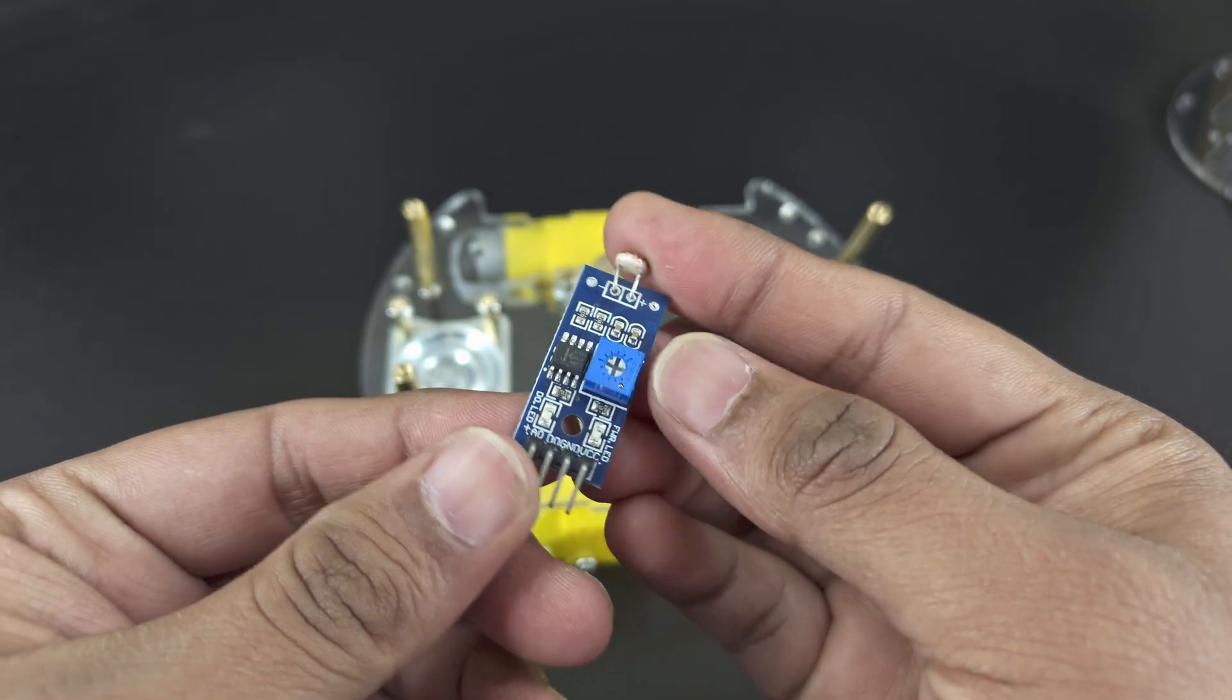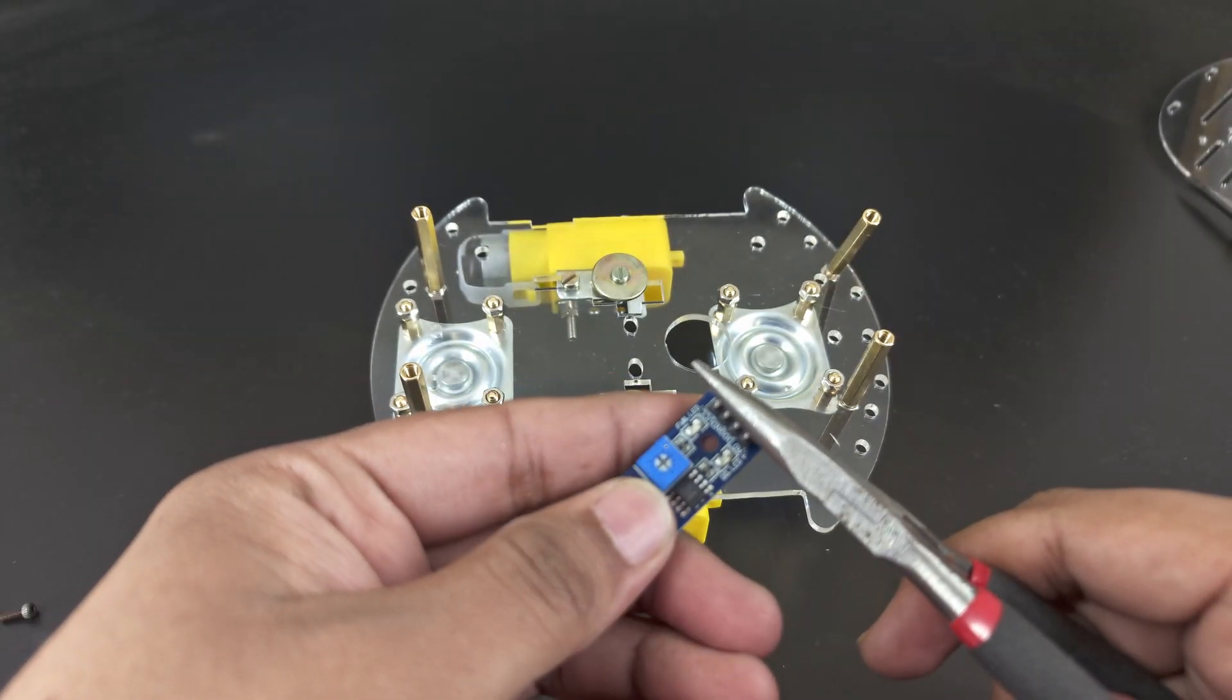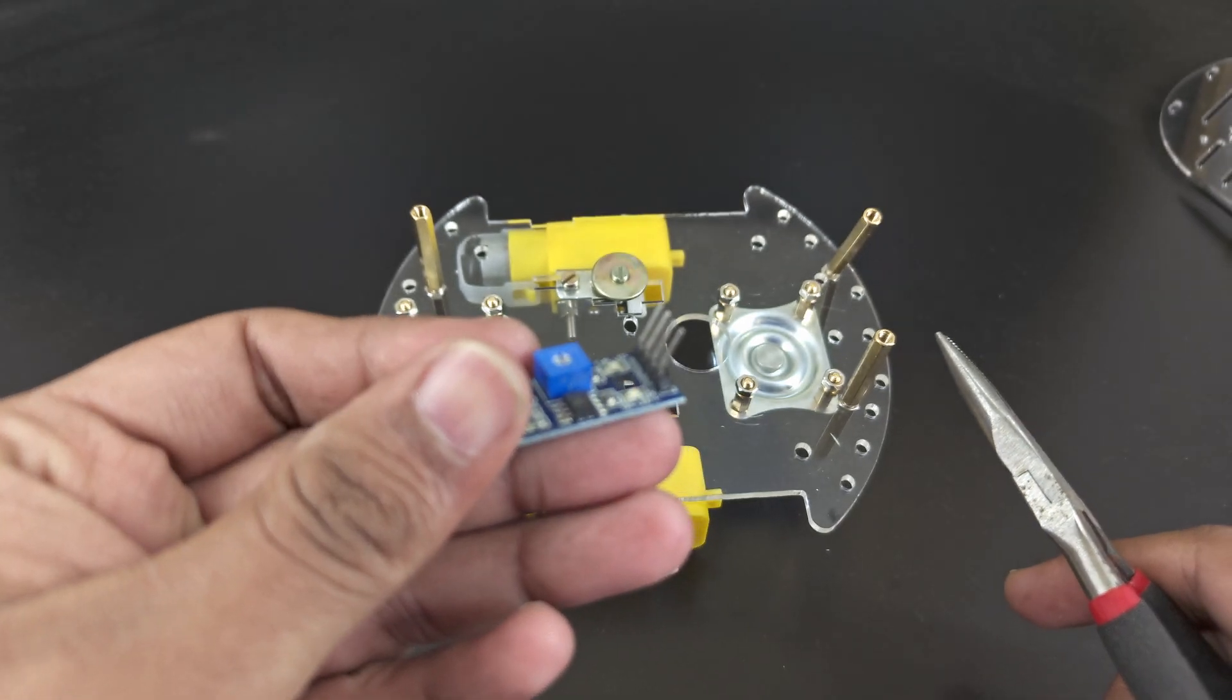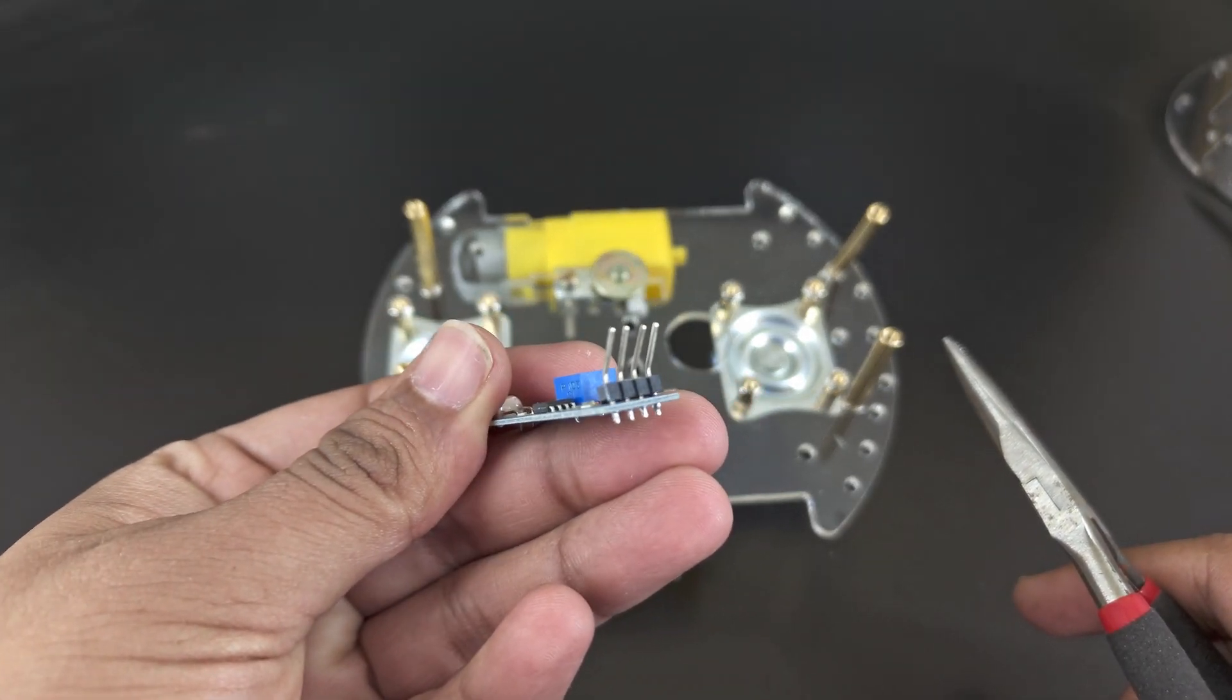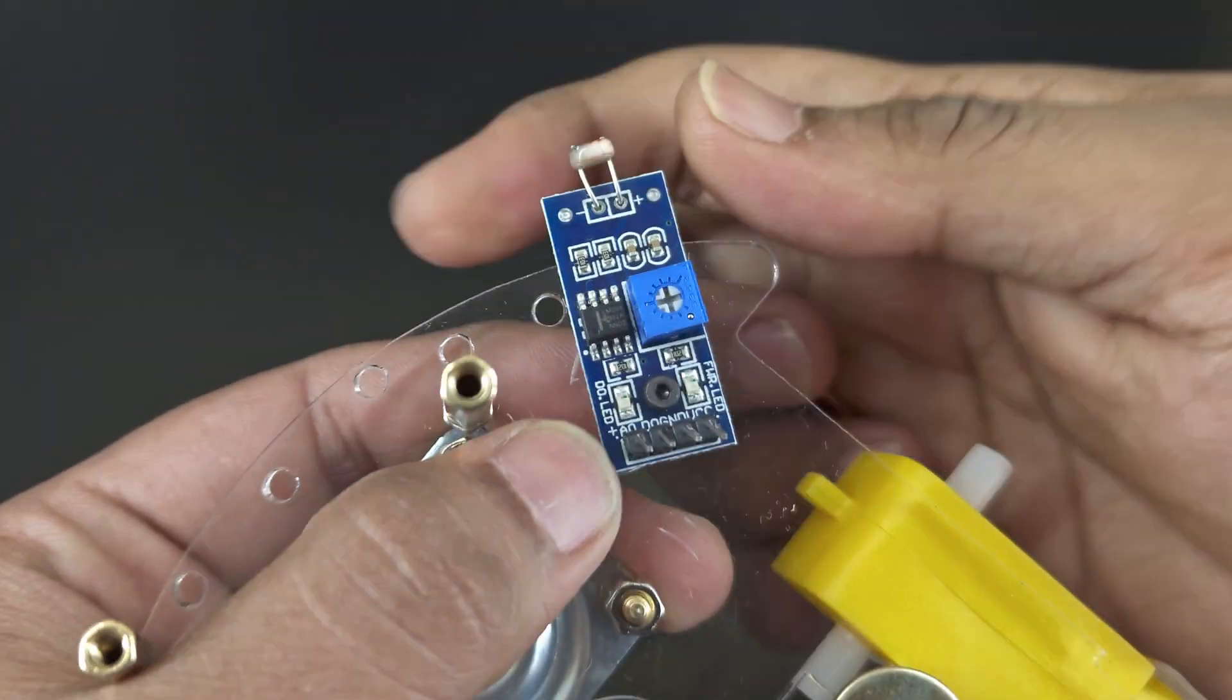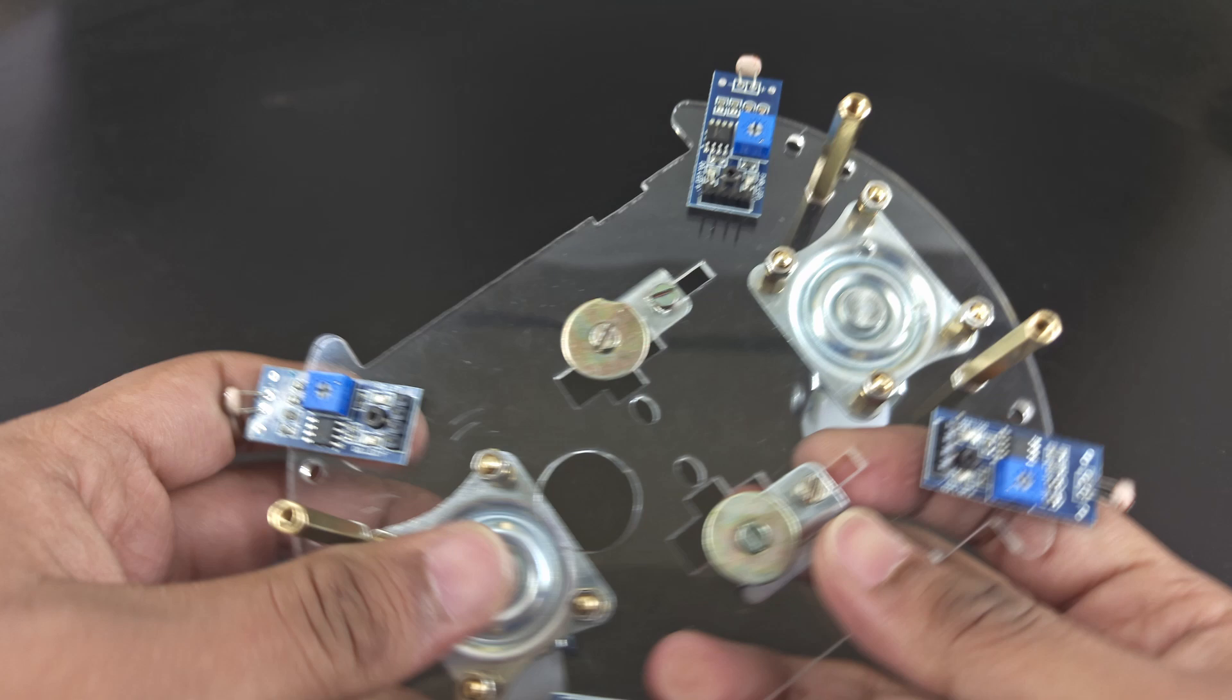Then put LDR modules in. Place them on different sides of the chassis. Make sure they're evenly spaced, as they will detect the light intensity.